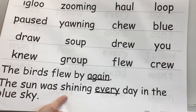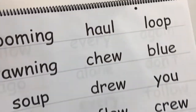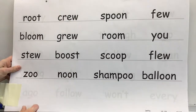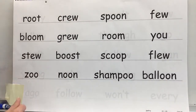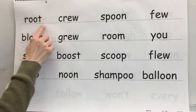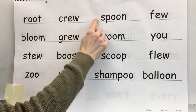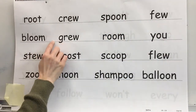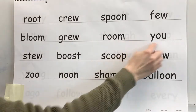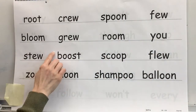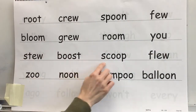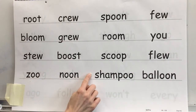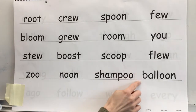Okay, spelling words are next. Let's get ready to read our words. Root. Crew. Spoon. Few. Bloom. Grew. Room. You. Stew. Boost. Scoop. Flue. Zoo. Noon. Shampoo. Balloon.